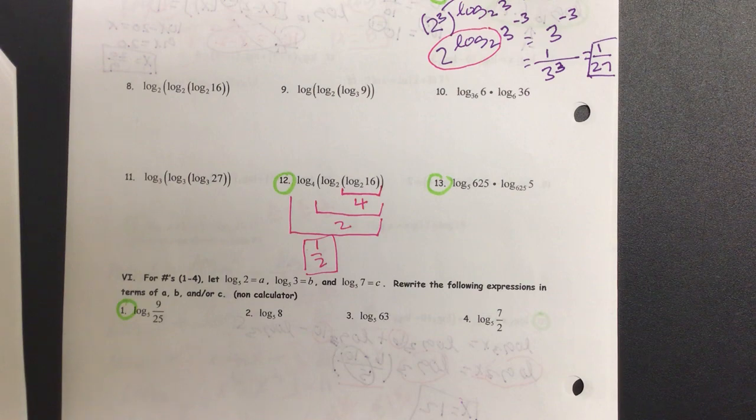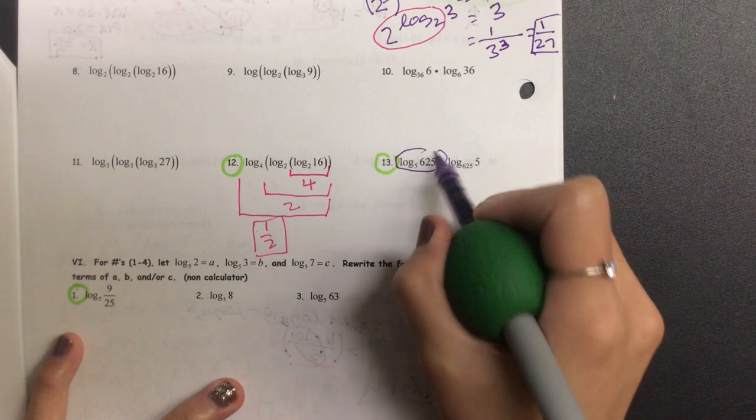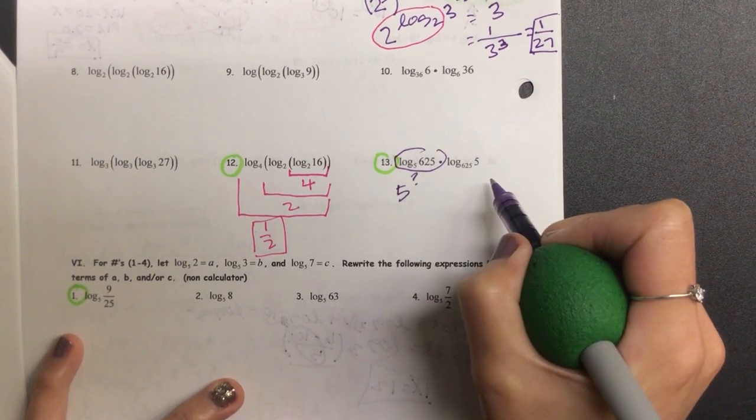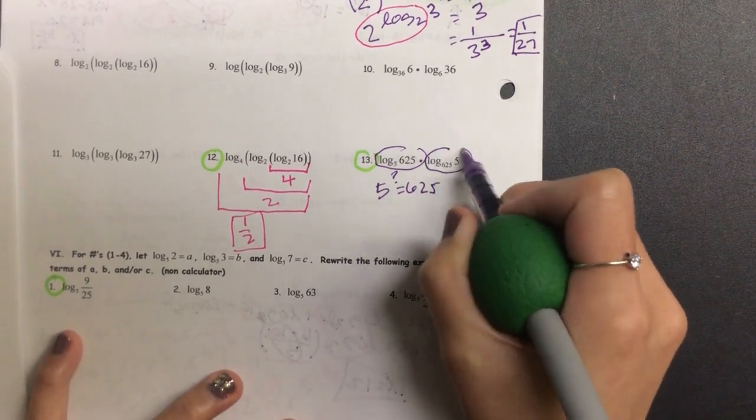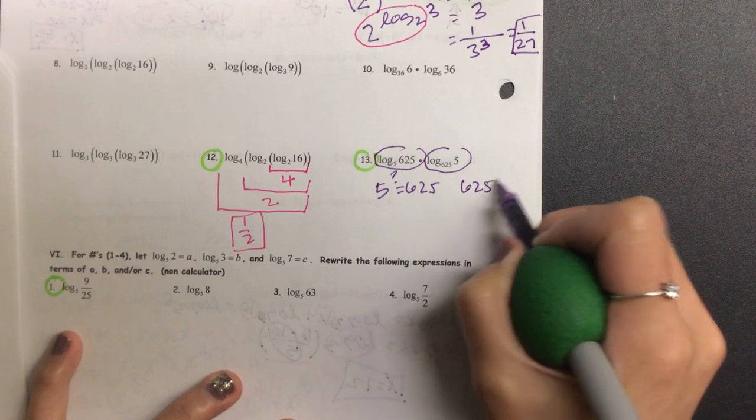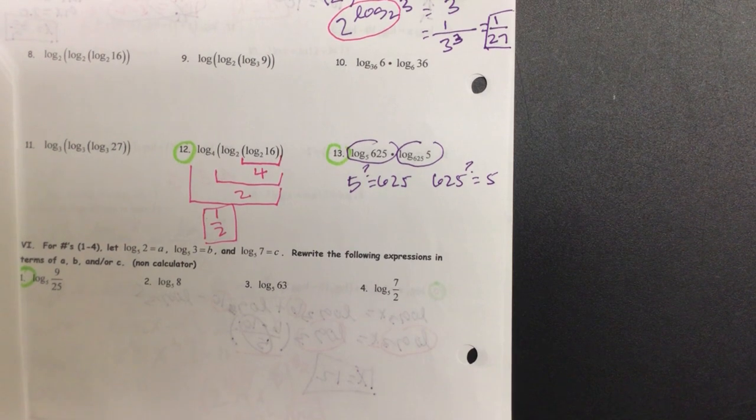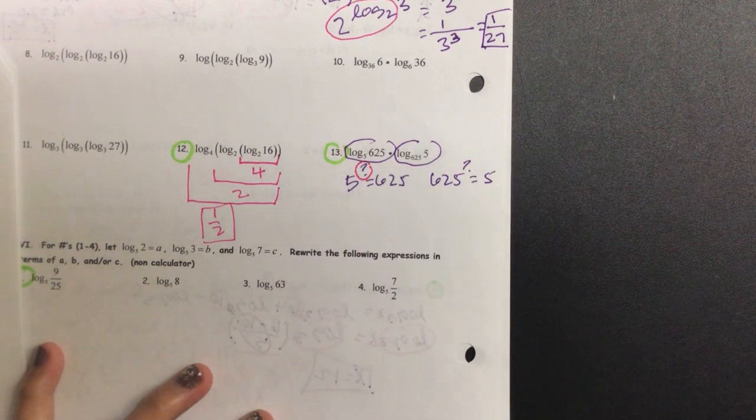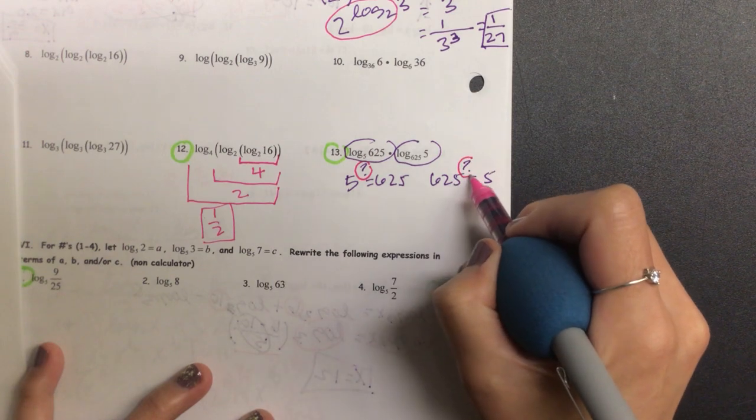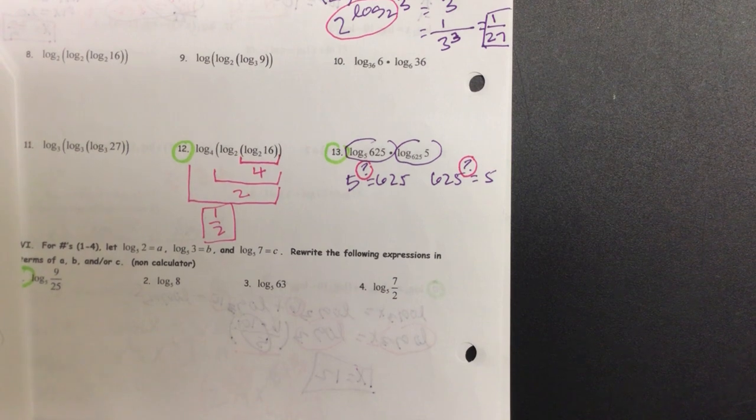For the next one, I'm going to actually write it with some work on this one. So this is going to give us 5 to the power of something is equal to 625. This right here is going to give us 625 to the power of something is equal to 5. Let's kind of think about what's going to happen. This number is going to be greater than 1, right? This number is going to be less than 1. Any idea what those 2 being multiplied should equal? 1. Why is that?